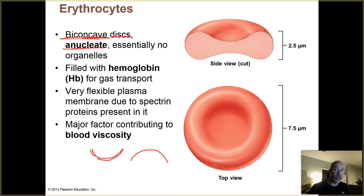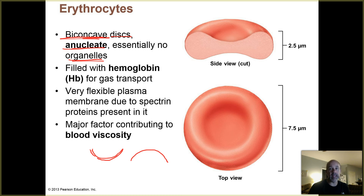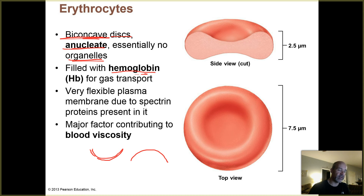Anucleate — they don't have a nucleus and essentially no organelles. So most of those little membrane-covered compartments you learned about at the beginning of Biology 201 are gone in erythrocytes because they're not really needed for their functions. Erythrocytes are really just big bags full of hemoglobin, which is a type of protein that transports oxygen gas throughout the body. HB, by the way, is an abbreviation for hemoglobin. We'll be talking a lot about hemoglobin in this unit.